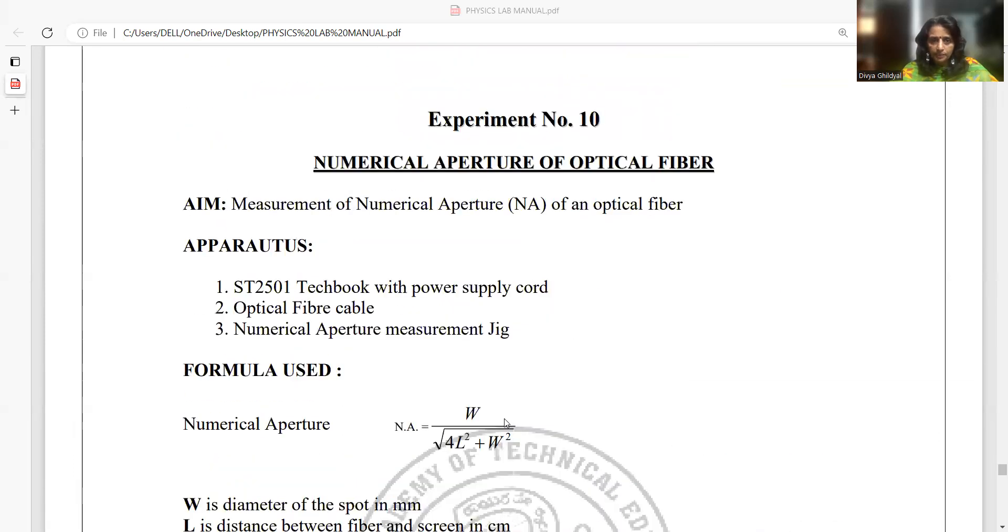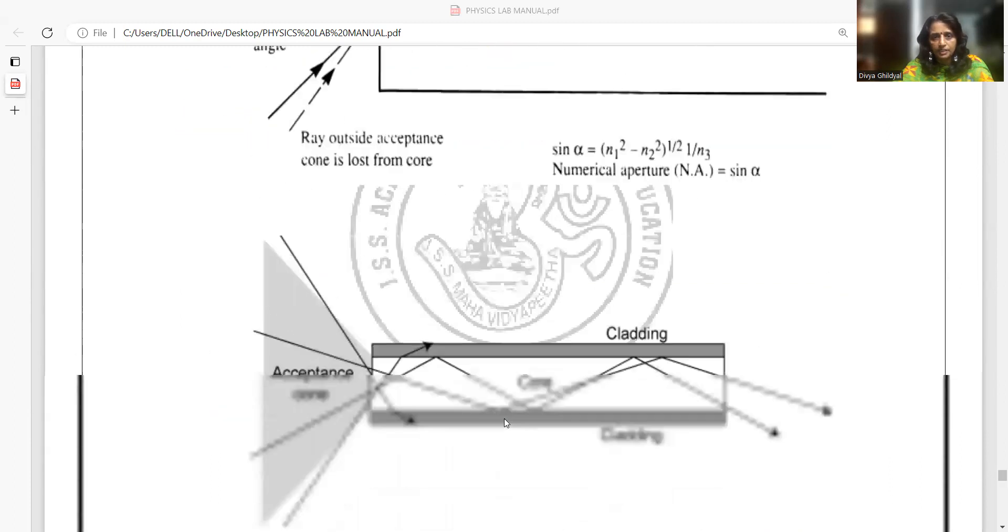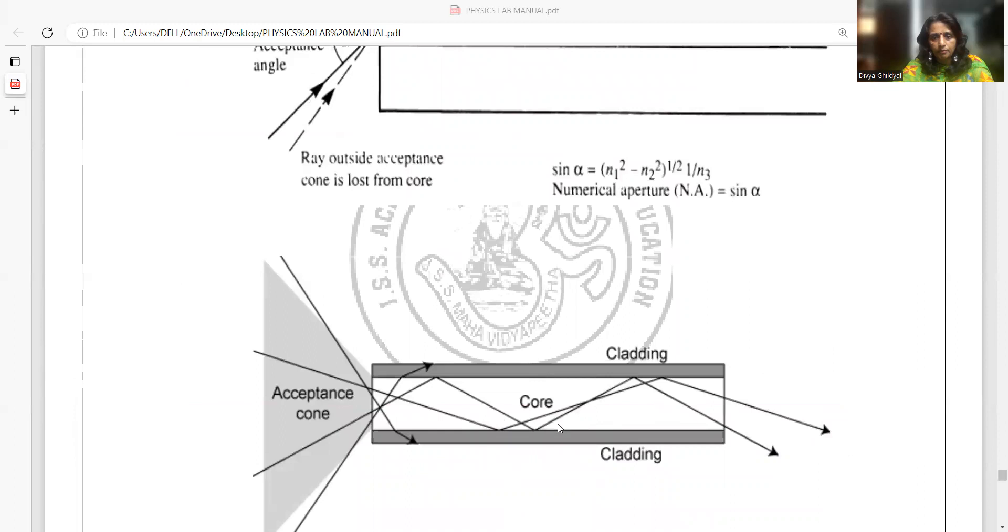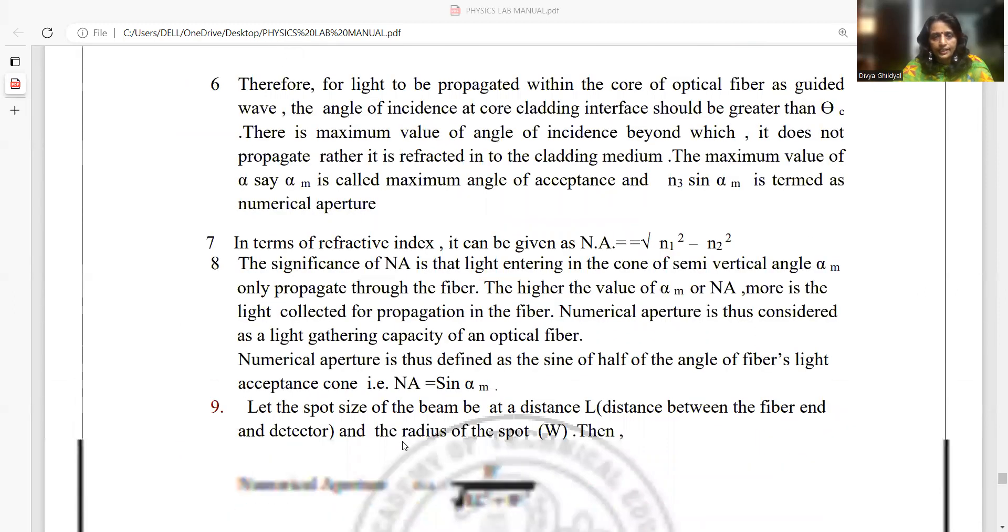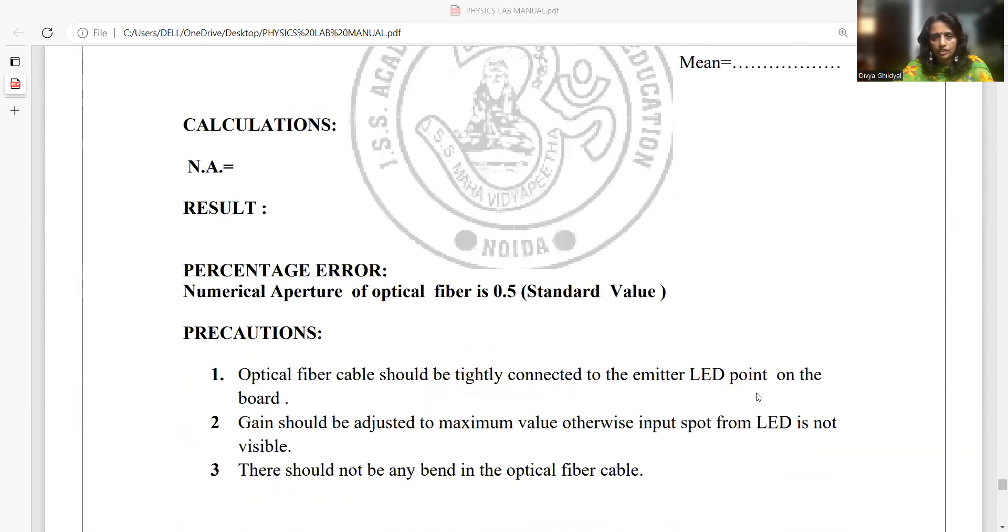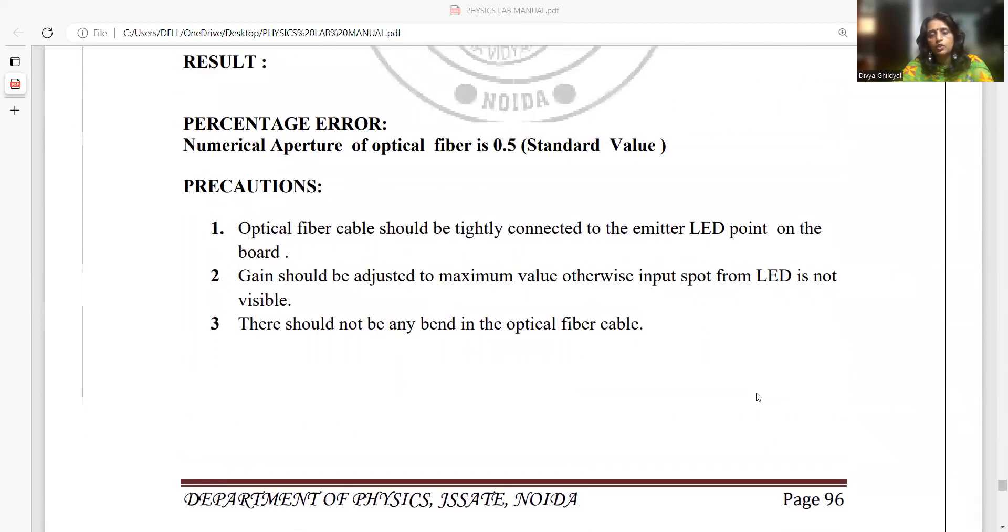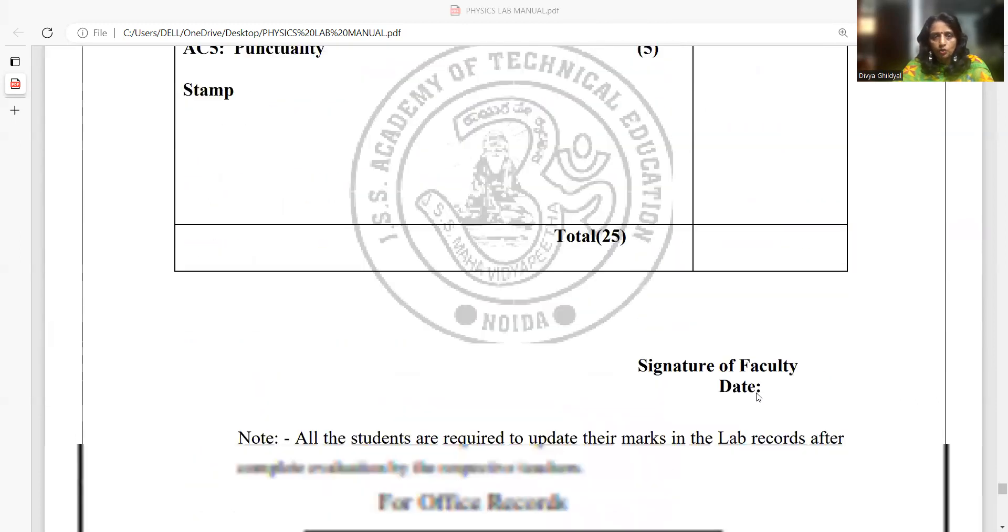Then, my numerical aperture experiment to measure the numerical aperture of an optical fiber. Formula used is W / √(4L² + W²), where W is diameter of the spot in millimeter which has been given to me in the physics lab, and I have to find the distance between the fiber and screen in centimeters. I will draw my circuit diagram of core, cladding, acceptance angle, etc. And then, I will make the observation table and the distance at which my first circle gets filled up, I will take for the second, third, and fourth and put these values in this formula. Standard value of numerical aperture is 0.5. And biggest precaution is optical fiber cable should not be bent much because it consists of a dielectric inside it and the source of light should be chosen properly.